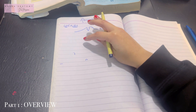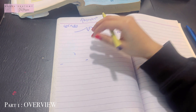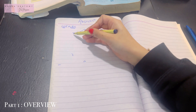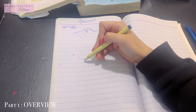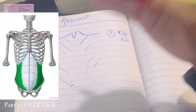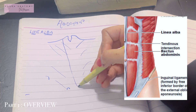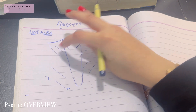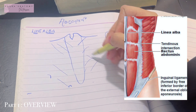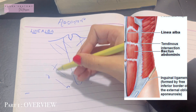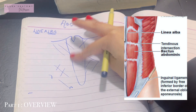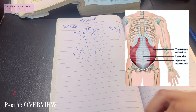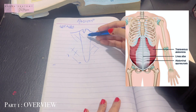When you dissect your abdomen, you come across the skin, then superficial fascia, and then the muscles. The first muscle you come across is the external oblique. Once you dissect the external oblique, you come across the rectus abdominis. Just on the sides of the rectus abdominis you can see the internal oblique, and when you remove all of that you come across the transversus abdominis.